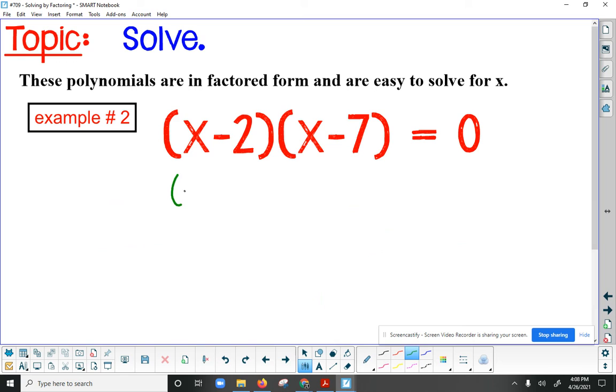If I plug in a two here, and a two here, I get zero times negative five. Yep, that checks. If I plug in a seven here, and a seven here, I get five times zero, and that's also true. It's equal to zero. So I know that my solutions work.